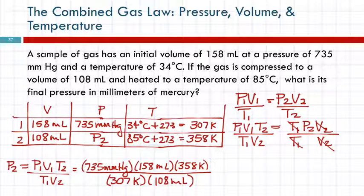And then check the units. Are units cancelling out? Milliliters cancel. Kelvins cancel. The unit I have left is millimeters of mercury, a unit of pressure. This is a good sign.